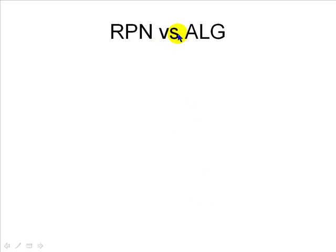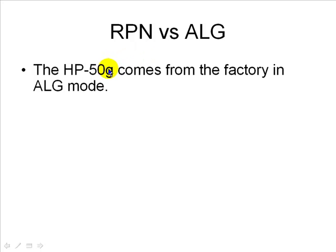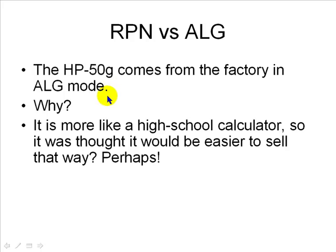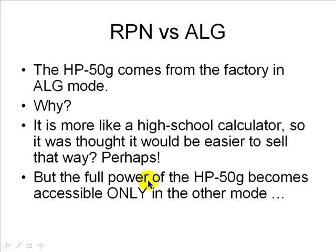RPN versus ALG. From the factory, the HP 50G comes in ALG mode — algebraic mode. In that mode, it's more like a high school calculator, so it's possible that they thought it would be easier to sell it that way. That is not important. What is important is that the full power of the HP 50G becomes accessible, in my opinion, only in the other mode.